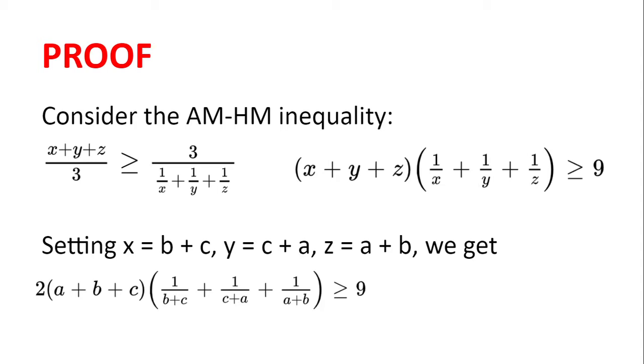So consider the AM-HM inequality, which says that if we have x, y and z, x plus y plus z divided by 3 is greater than or equal to 3 divided by 1 over x plus 1 over y plus 1 over z.